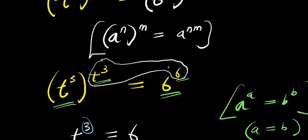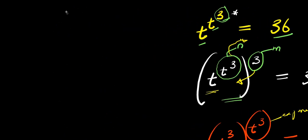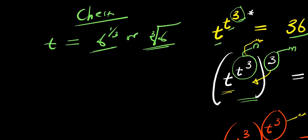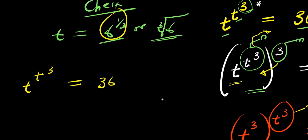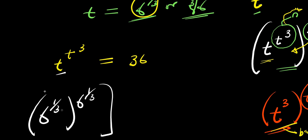Now the next thing we can do will be to check this value of t. We have t equals 6 to the power of 1 over 3, or the cube root of 6. I need to check for this, so I recopy the problem: t to the power of t to the power of 3, equals 36. I replace t with 6 to the power of 1 over 3: we have 6 power 1 over 3, raised to the power of 6 power 1 over 3, and this is raised to the power of 3, equals 36.